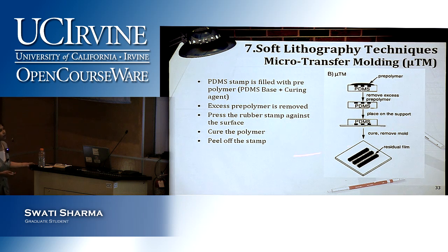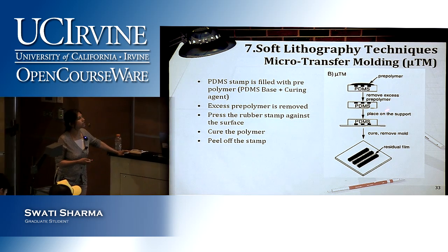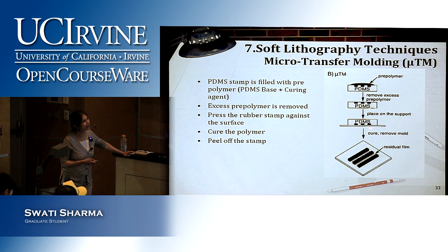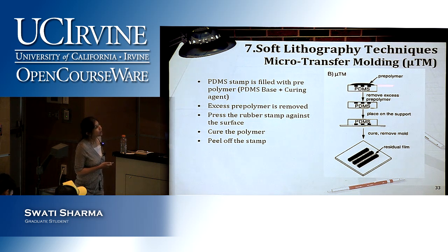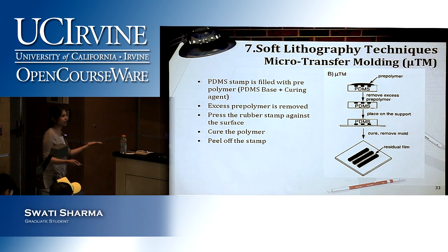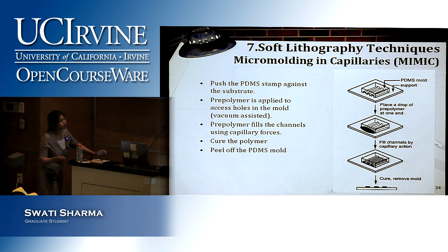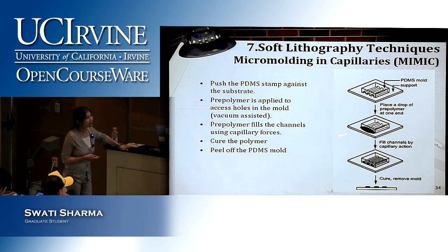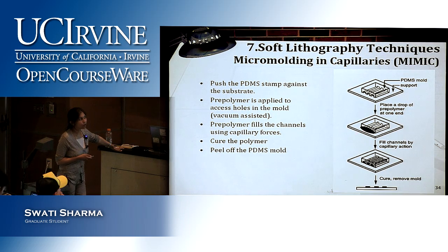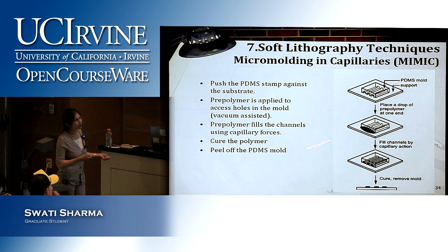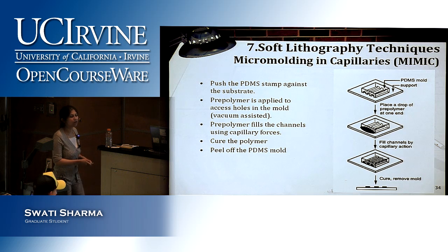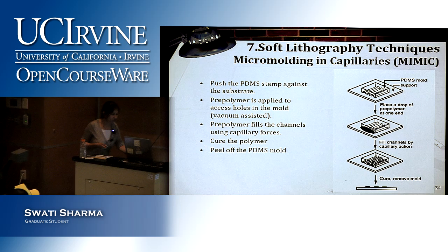Another variation is microtransfer molding: you fill a pre-polymer into the mold, place the substrate on top, remove the mold, and the design is transferred onto the substrate — fill, cure, and peel off the stamp. Capillary molding uses capillary-like PDMS structures: you place a PDMS pre-polymer drop at one end and pull it through, possibly vacuum-assisted, filling the entire capillary. After curing and removal, you get nice long capillary channel structures useful for various microfluidic applications.